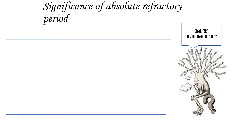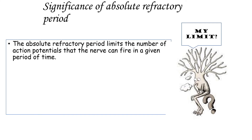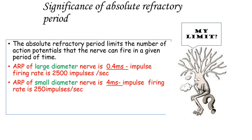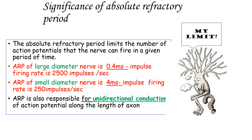The significance of the absolute refractory period is that it determines the upper limit of the number of action potentials that can be fired over a period of time. For a large-diameter fiber with an absolute refractory period of about 0.4 milliseconds, up to 2500 impulses per second can pass through, whereas for a small fiber, it may be only 250 impulses per second. The absolute refractory period is also responsible for the unidirectional conduction of the action potential.